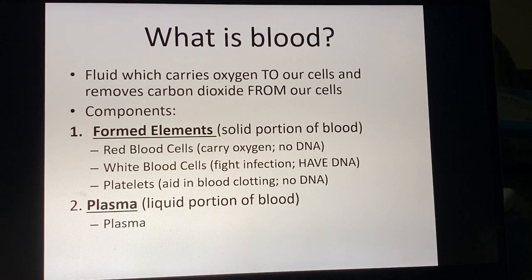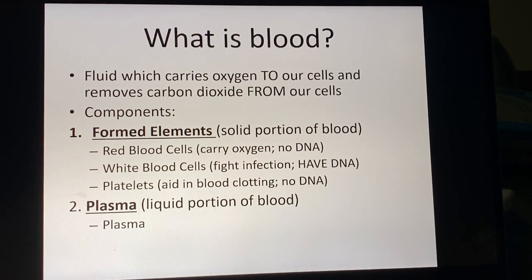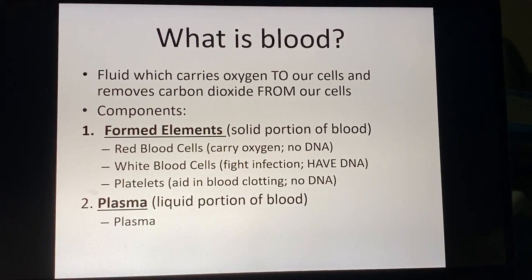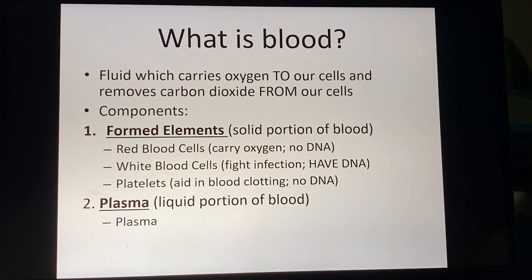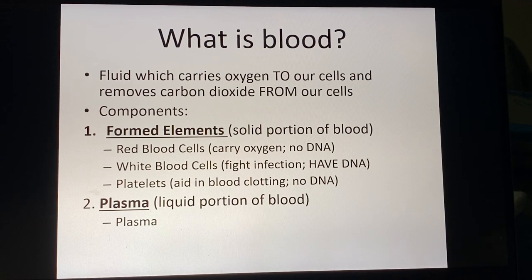Blood is defined as the fluid which primarily does gas exchange. It carries oxygen to our cells from our lungs, dumps off that oxygen at the cells, picks up carbon dioxide, and brings that back to our lungs so we can breathe it out. Lots of other things are also transported around the body via the blood, but its first and most primary function is gas exchange.